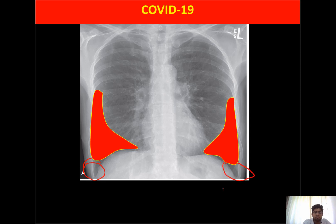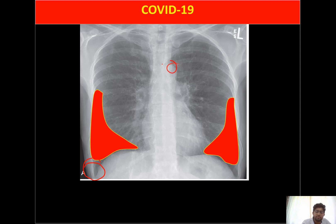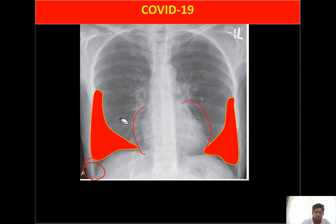An important feature is that there will not be pleural effusion — fluid in the pleural space will not be present. There won't be any mediastinal lymphadenopathies, and pericardial fluid collection will not be seen either.